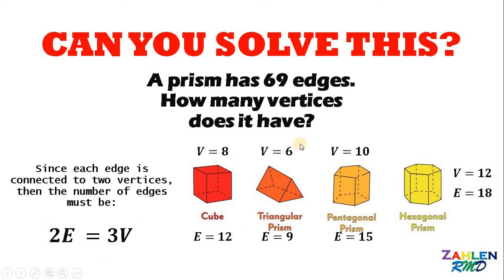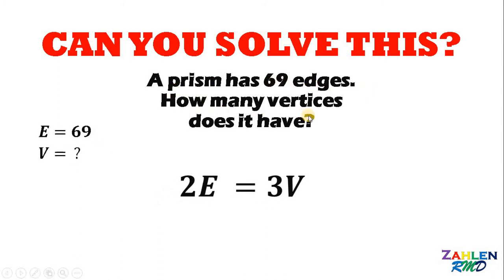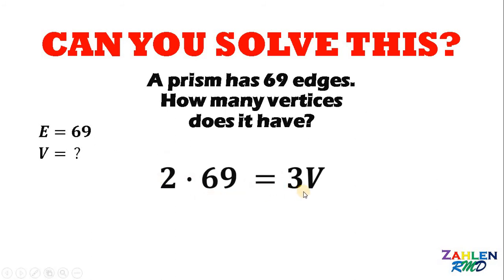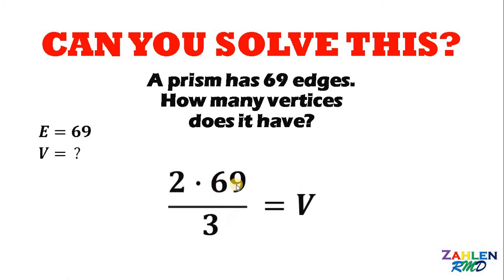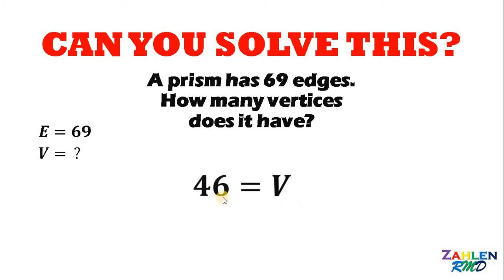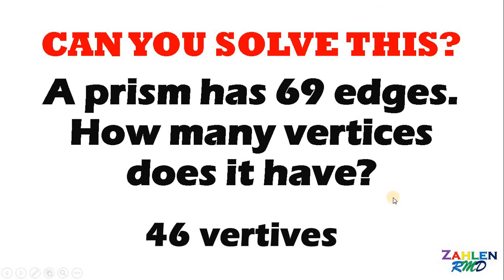We can now use this formula to answer our question. A prism has 69 edges — how many vertices does it have? E equals 69, and we want to solve for V. Using 2E = 3V: 2 times 69 equals 3 times V. Dividing both sides by 3, we get V equals 2 times 69 over 3. Since 69 divided by 3 is 23, then 2 times 23 gives us 46. Therefore, if a prism has 69 edges, it has 46 vertices. And as always, we are done.